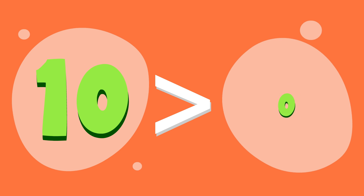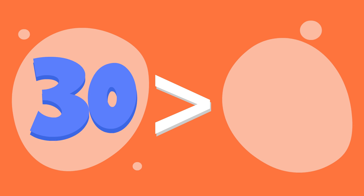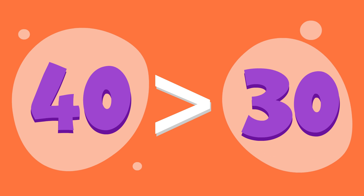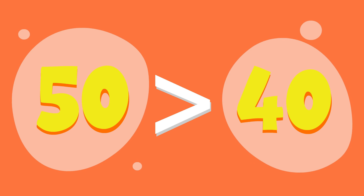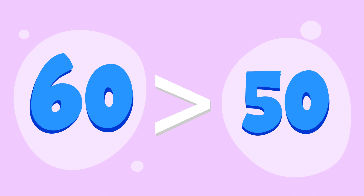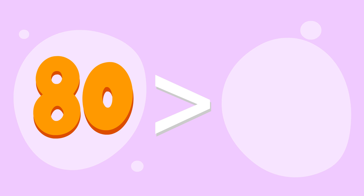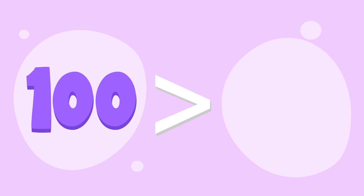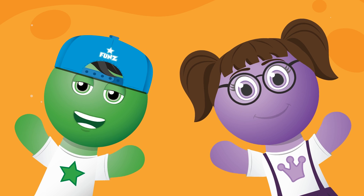Ten is greater than zero. Twenty is greater than ten. Thirty is greater than twenty. Forty is greater than thirty. Fifty is greater than forty. Sixty is greater than fifty. Seventy is greater than sixty. Eighty is greater than seventy. Ninety is greater than eighty. One hundred is greater than ninety. Greater than less than inequalities.